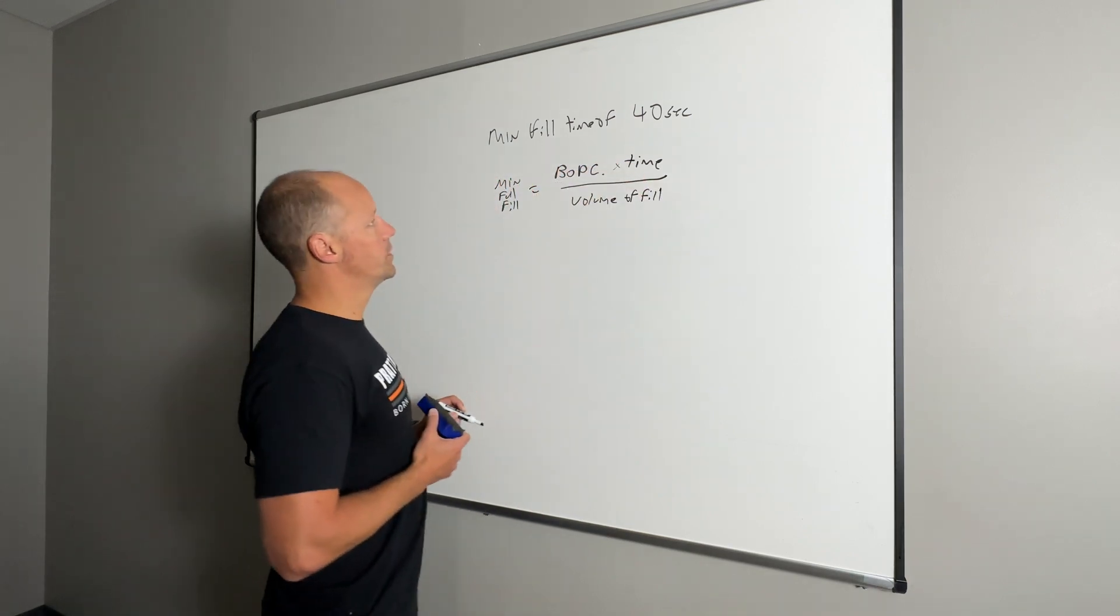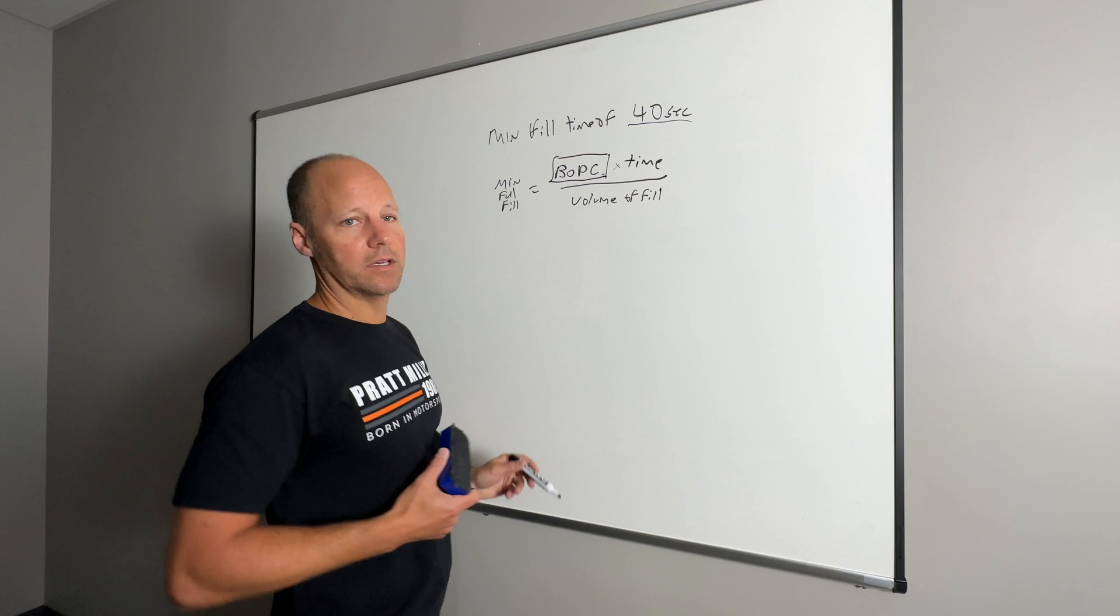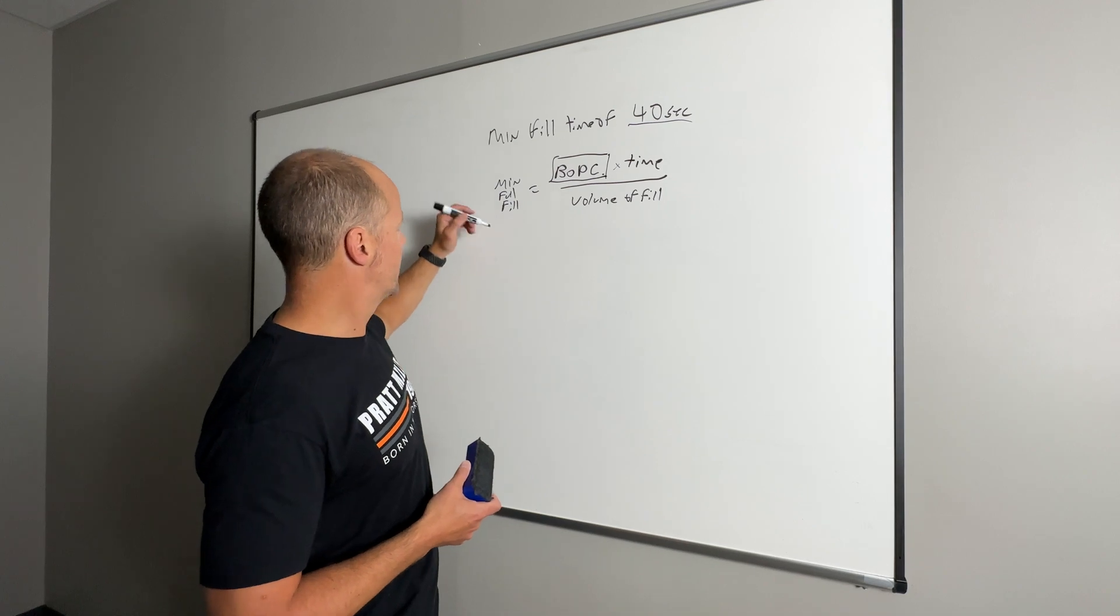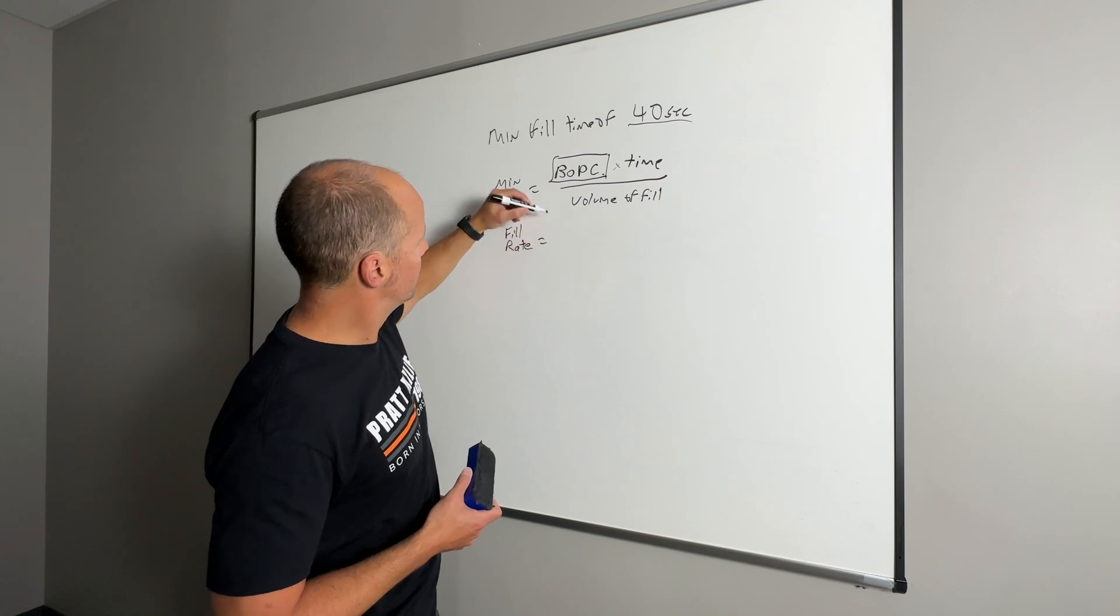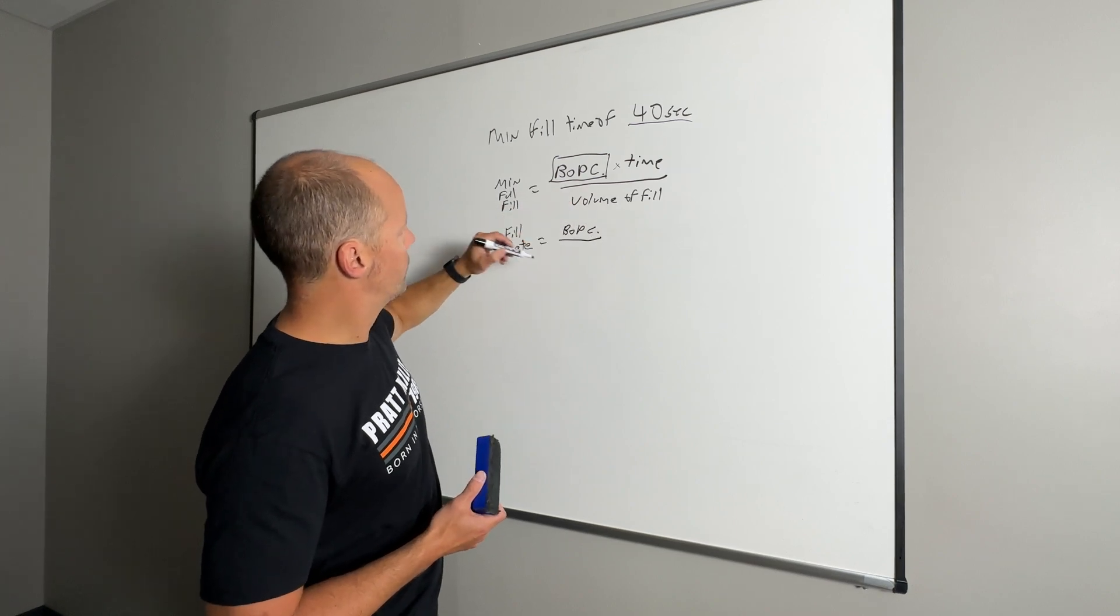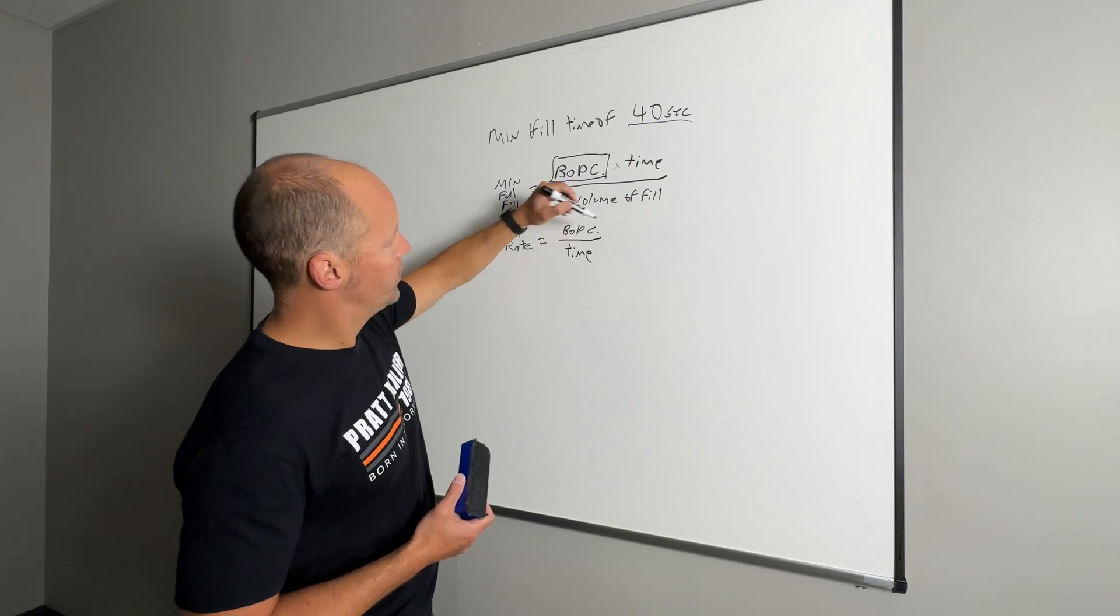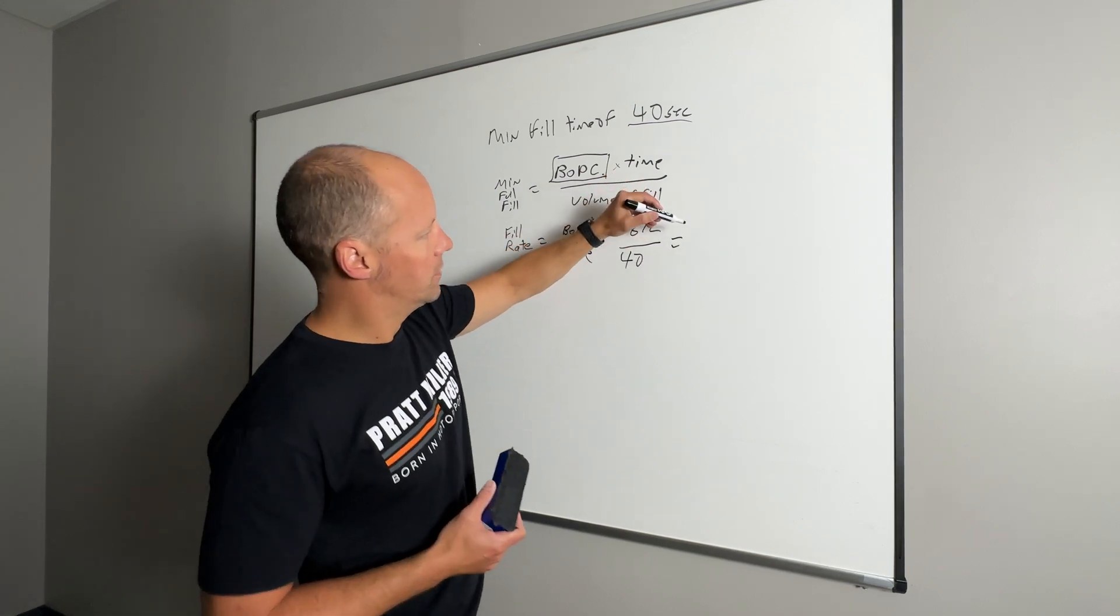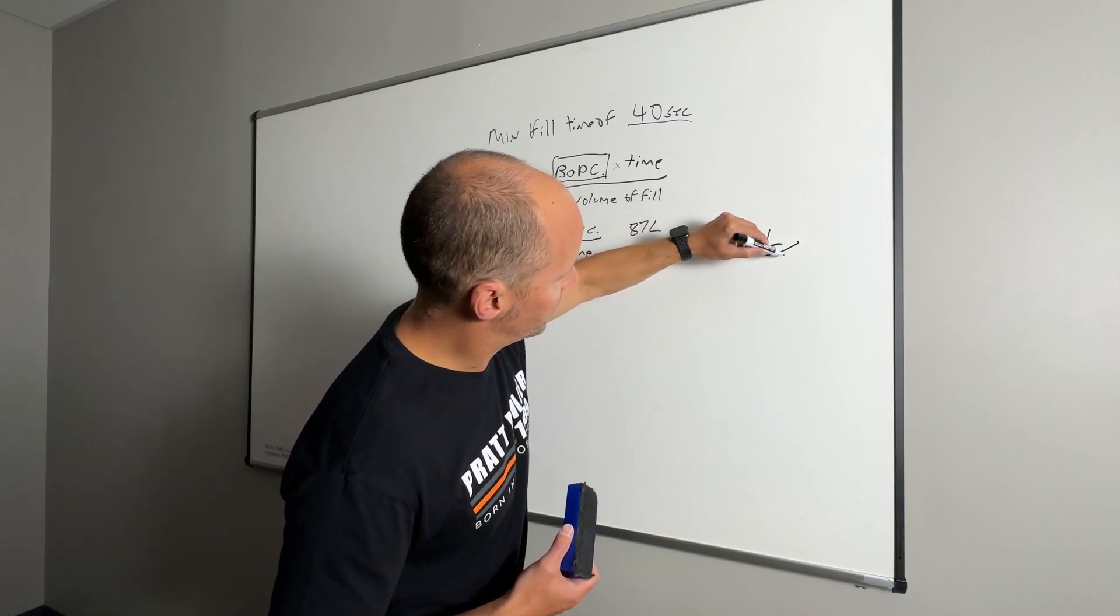So we know the 40 seconds of fill time, we also know the BOP capacity. So from that, we can actually find a fill rate that needs to be hit. So the fill rate is going to equal the BOP capacity over the time. Our BOP capacity is 87 liters, we have 40 seconds, and that's going to equal 2.175 liters per second.